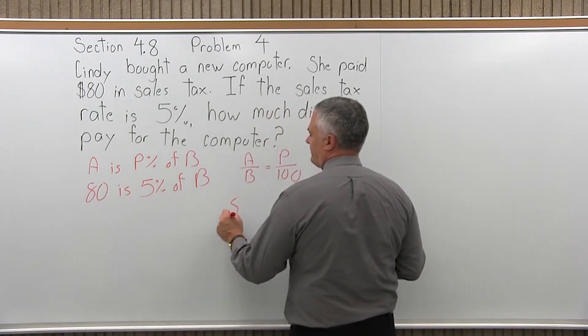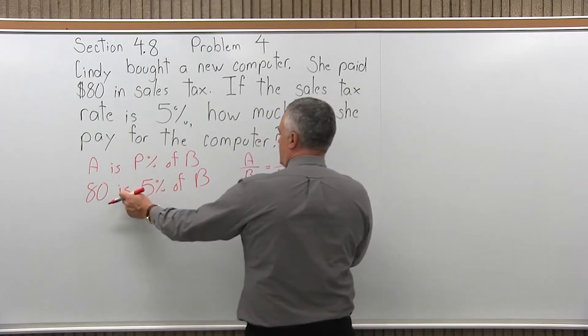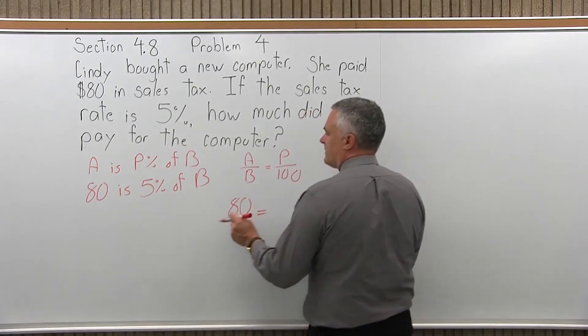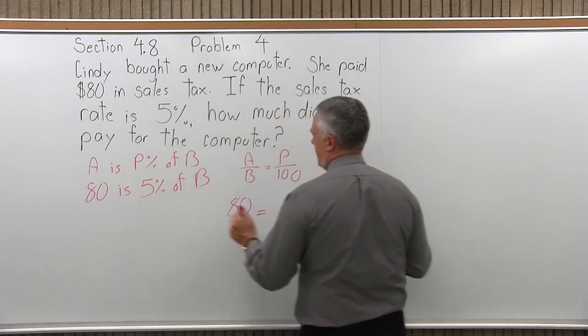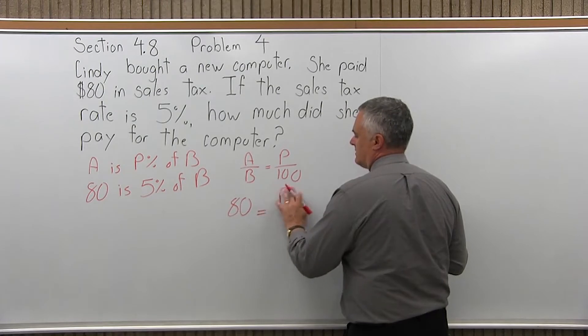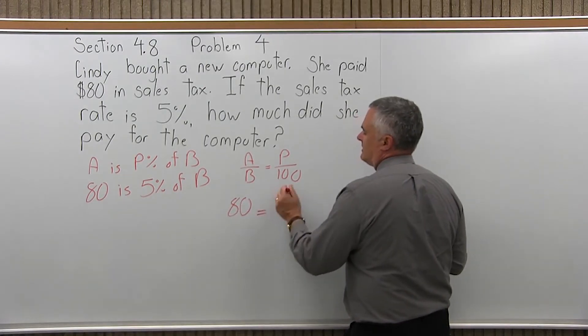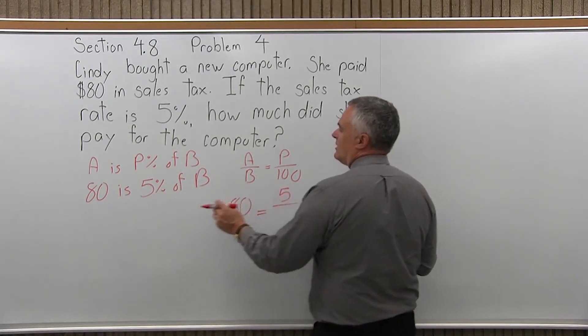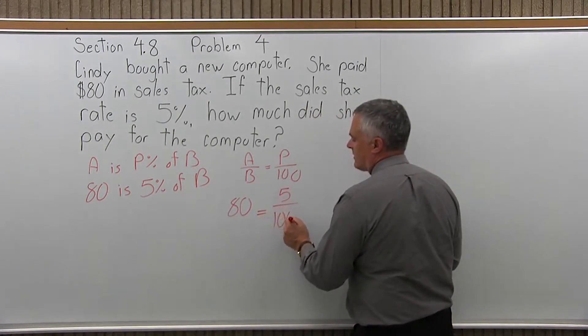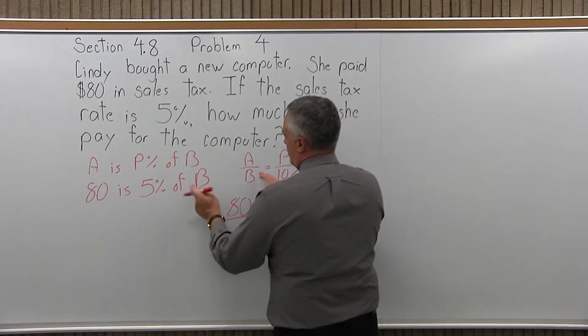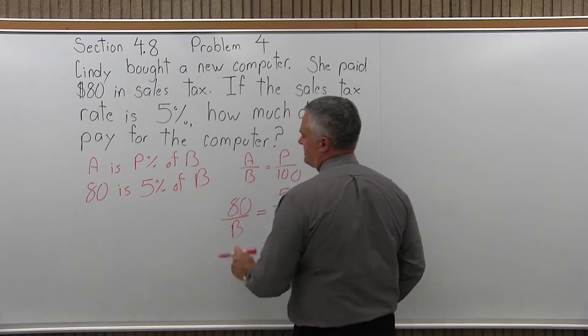80 is the A. The is becomes the equal sign. The P is 5. The percent becomes the 100. And then the B in the denominator is the unknown. It just stays as B.